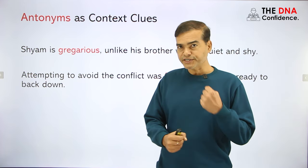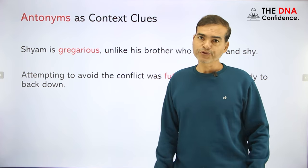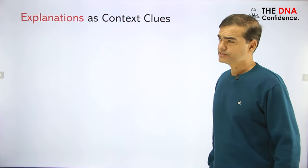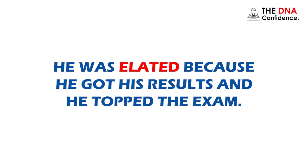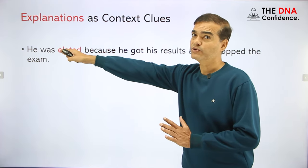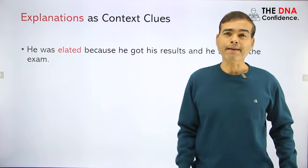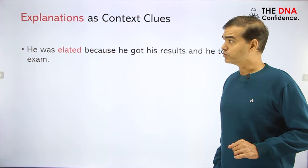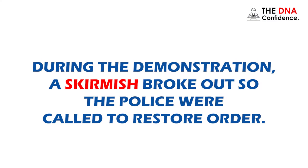We were trying to avoid the conflict, but no one was ready to stop, so it was futile — of no use. That is how antonyms work as contextual clues. Next are explanations as contextual clues. For example: 'He was elated.' An explanation is given — 'he got his results and topped the exam.' From this, you understand elated means happy. Even if you don't know the exact meaning, you can figure it out from the explanation.